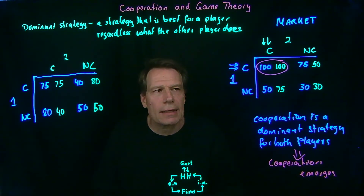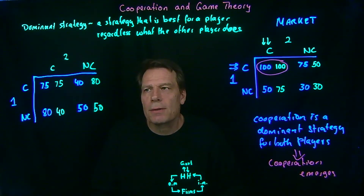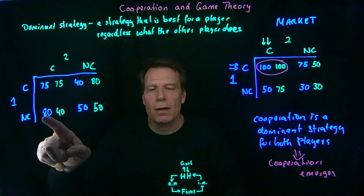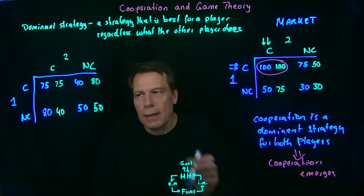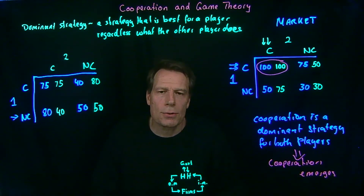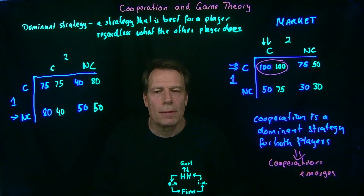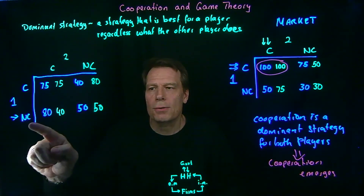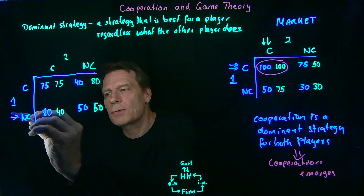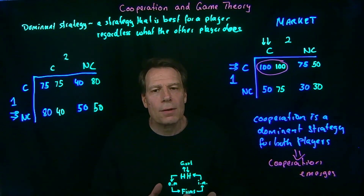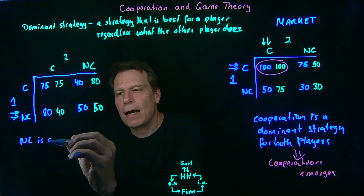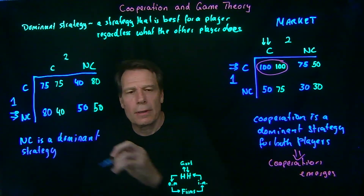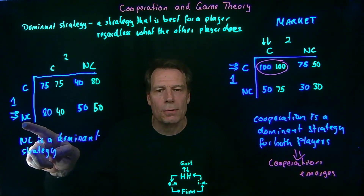We can analyze the incentives in this game the same way. Suppose you're Player 1 and you think Player 2 is going to conserve — you're in that column, choosing between a payoff of 80 by not conserving or 75 by conserving. 80 is better, so you'll choose not to conserve. What if you think the other player is not going to conserve? You're choosing between 40 and 50 — 50 is higher, so not conserving again gets you a higher payoff. In other words, not conserving is a dominant strategy: no matter what you think the other player is going to do, your best response is not to conserve.